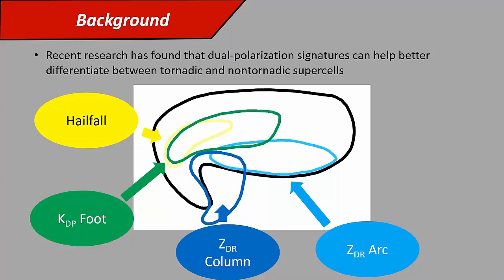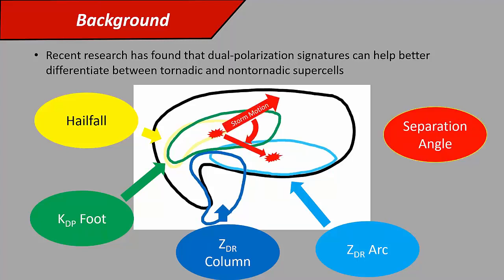The ZDR arc has been hypothesized to potentially be related to low-level storm inflow characteristics, like low-level SRH and storm-relative wind. And finally, the separation angle. This is an angle between a vector from the centroid of the KDP foot to the centroid of the ZDR arc and the storm motion vector. Previous work has shown that this tends to be larger, closer to orthogonal, in tornadic storms than non-tornadic storms, potentially because you may have larger SRH in storms with larger separation angles.